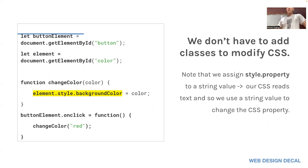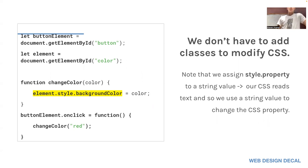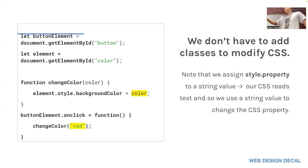We don't have to add classes to modify CSS — we can modify it directly through style properties, like element.style.backgroundColor. So you get the element with the id 'color', access its style and background color property, and set it to whatever is passed into the function. In this case, 'red' is passed in, so this will change the background color to red.